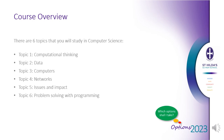There are six topics that you will study in Computer Science. Topic one is Computational Thinking. In Computational Thinking, we are not learning to think like a computer, but to understand how computers are used to solve problems. We learn how algorithms are developed and how they can be modelled using flow charts.